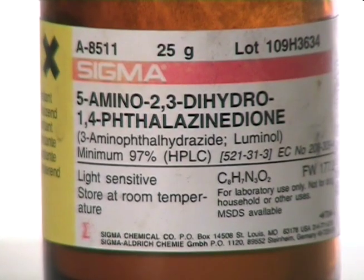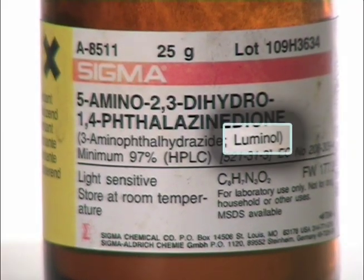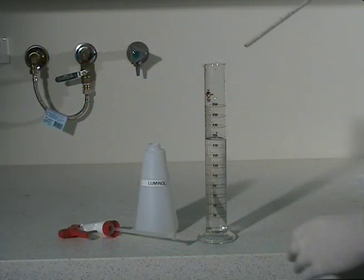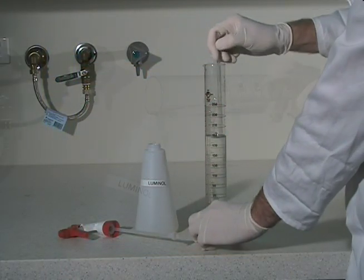The reason why this blood appears to glow is because of a chemical called luminol. And luminol is a very powerful weapon in a forensic scientist's fight against crime.